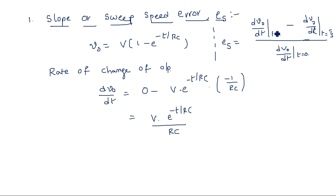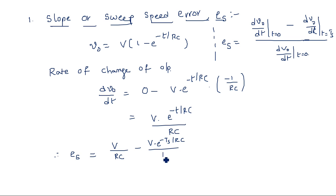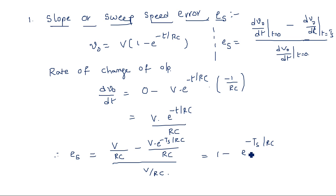We substitute t = 0 and t = Ts into dV0/dt. At t = 0, e to the power of 0 equals 1, giving V/RC. At t = Ts, it gives V times e to the power of minus Ts by RC, divided by RC. So Es equals (V/RC minus V times e to the power of minus Ts by RC divided by RC), all divided by the initial value V/RC. After cancellation, Es equals 1 minus e to the power of minus Ts by RC, which can also be written as 1 minus e to the power of minus A.